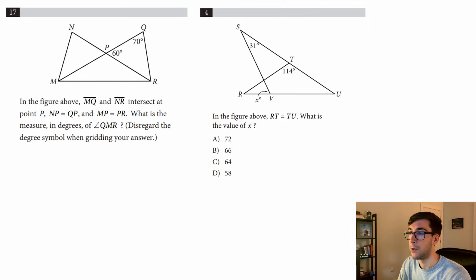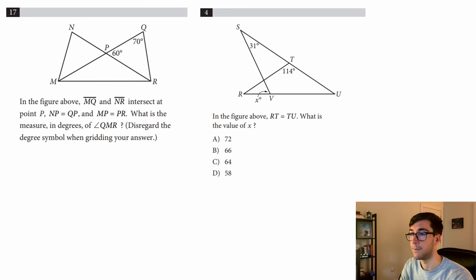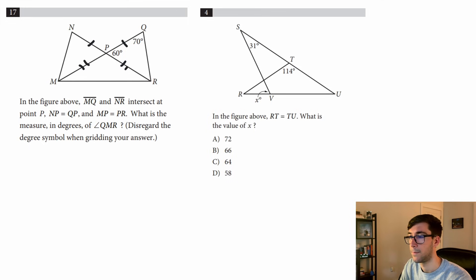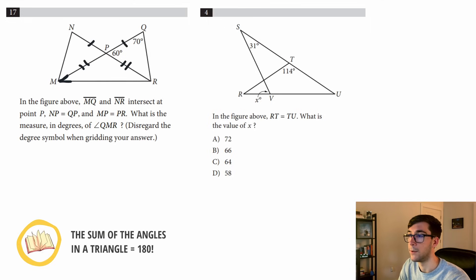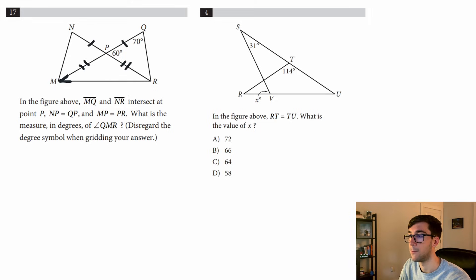Angle rule problems are a little bit like solving a sudoku puzzle — you don't really know where you're going, but as long as you keep filling in numbers you'll eventually get to the solution. In Problem 17, line MQ and R intersect at point P, NP equals QP, and MP equals PR. What is the measure in degrees of angle QMR? The middle letter is the angle, so we highlight that one. Rule number one: all triangles add up to 180 degrees. We have 70 and 60, so 70 plus 60 plus x equals 180.